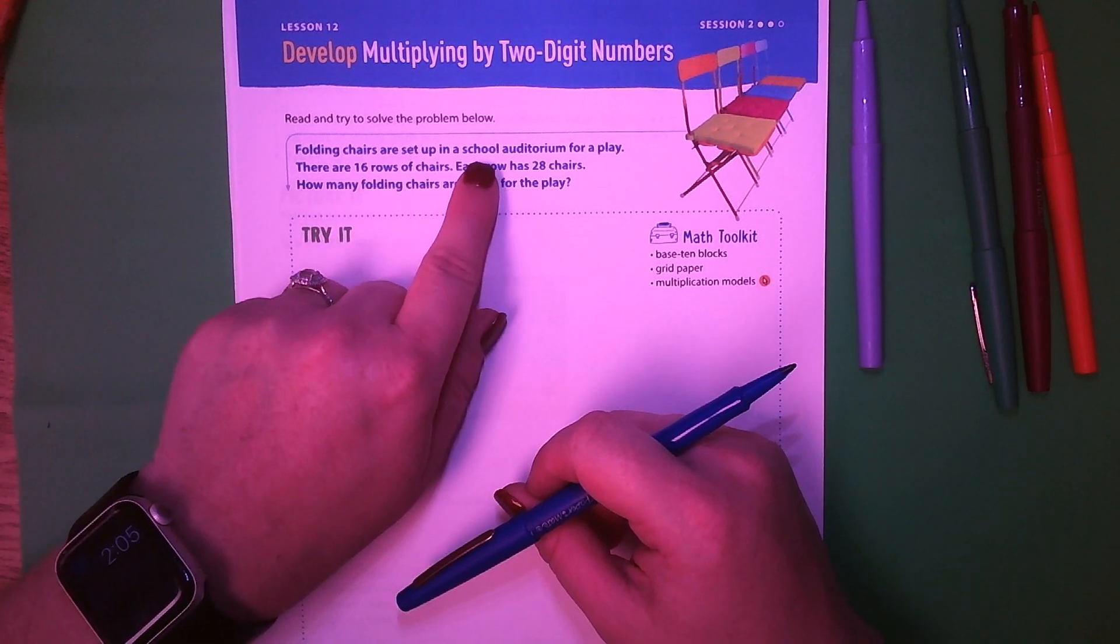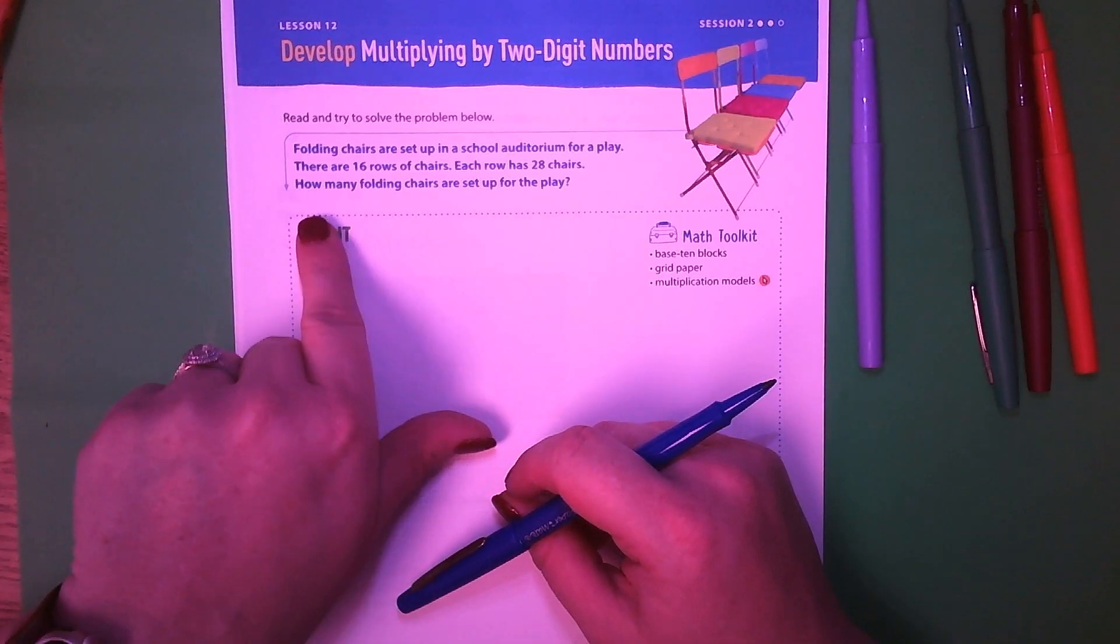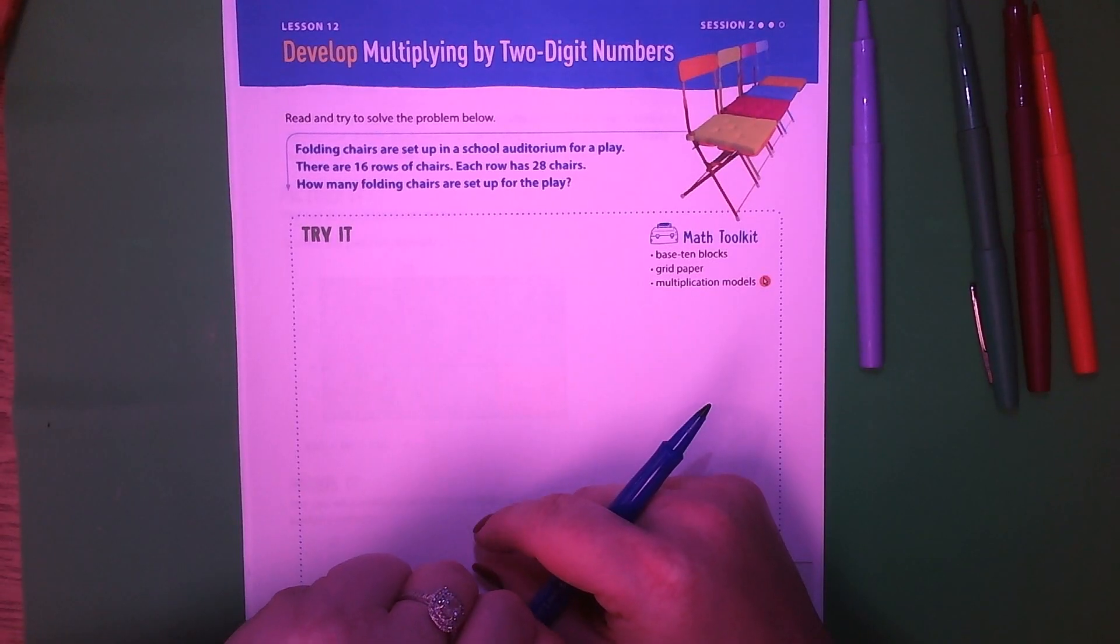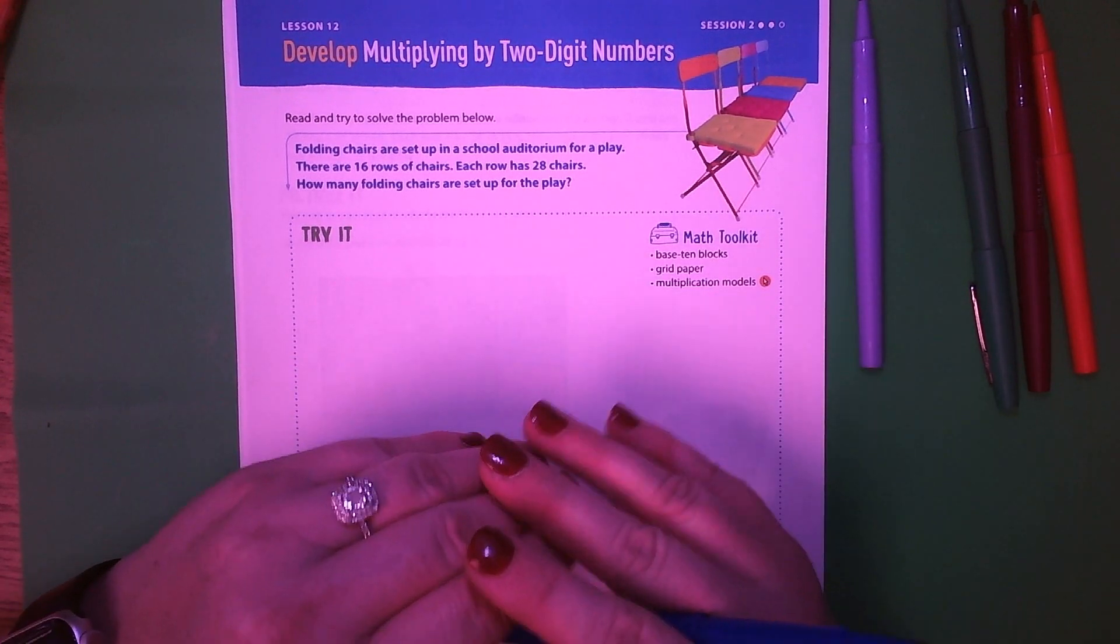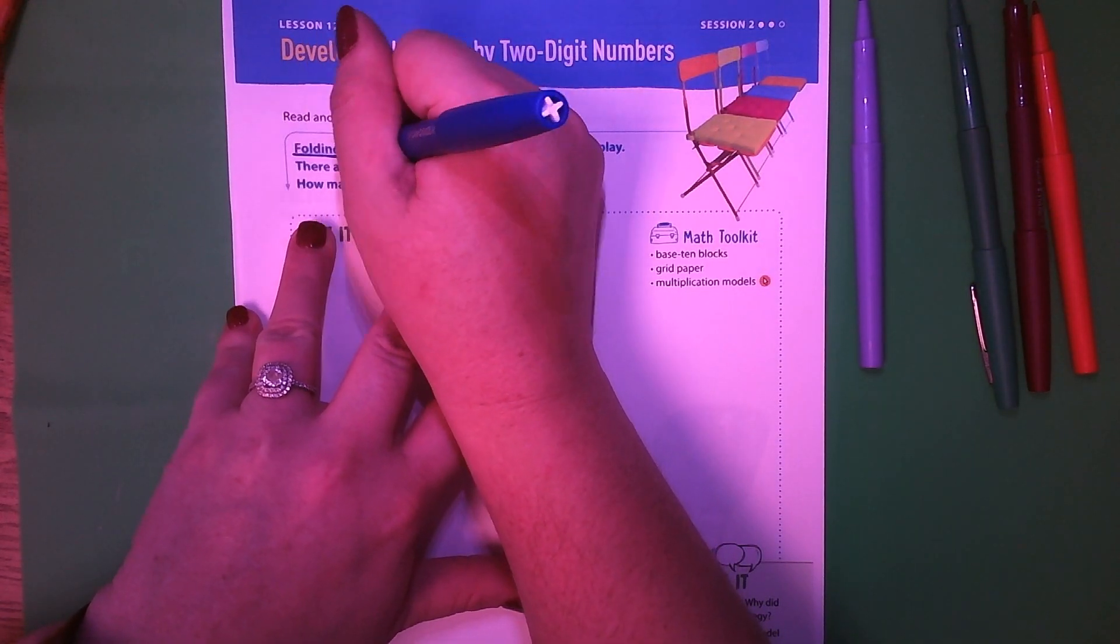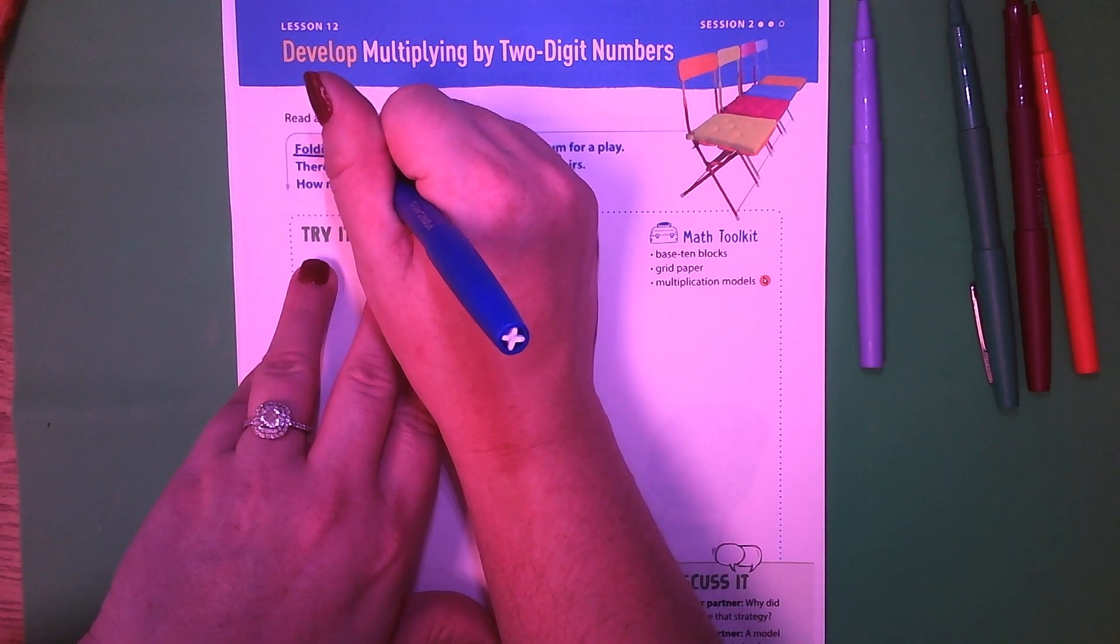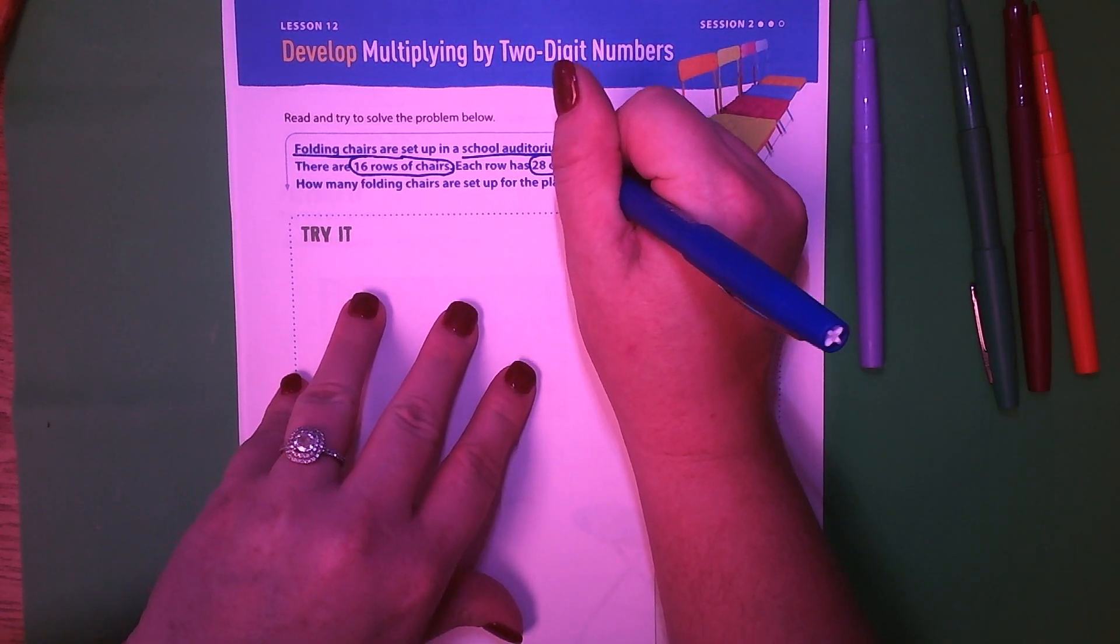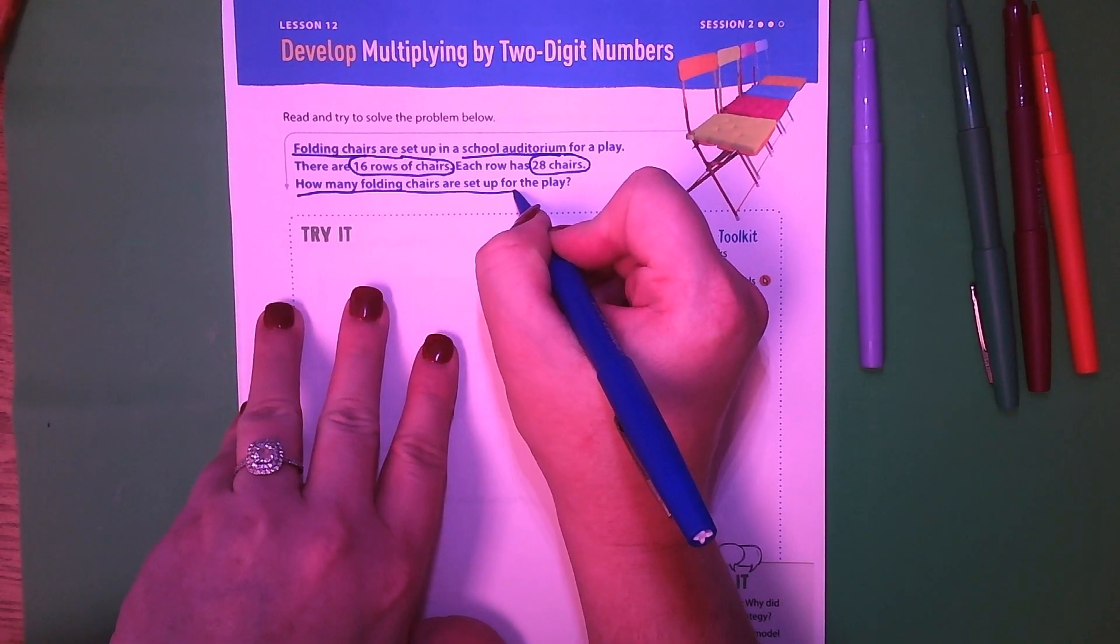Folding chairs are set up in a school auditorium for a play. There are 16 rows of chairs. Each row has 28 chairs. How many folding chairs are set up for the play? What is this problem about? We're talking about an auditorium or like a cafeteria, maybe a gym. It's a school auditorium, so it's a big room with folding chairs set up in rows for a play.